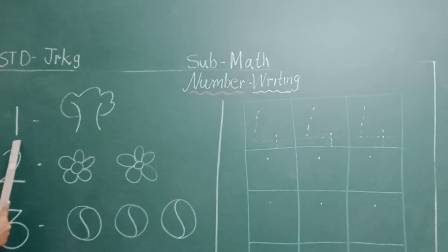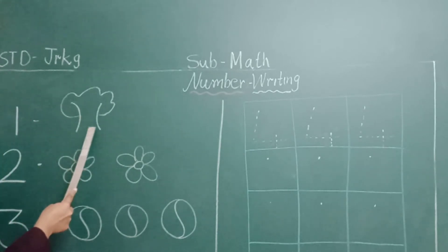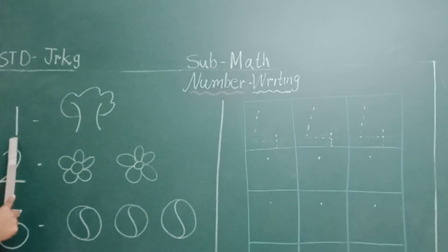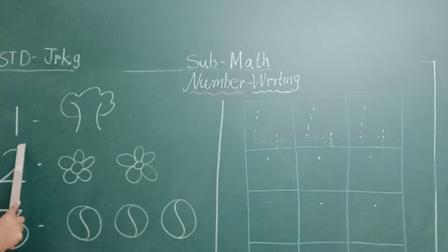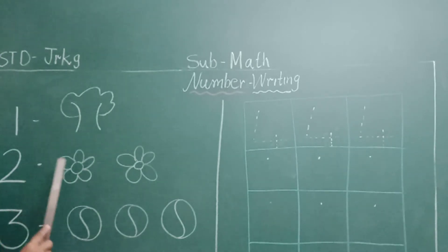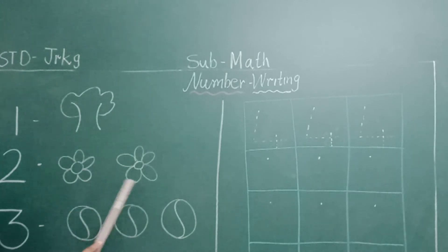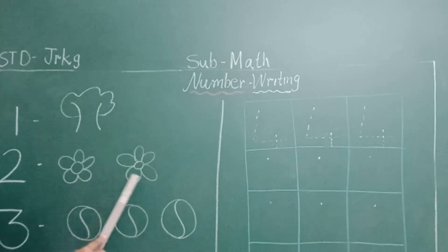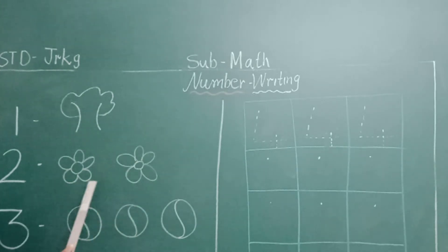Number 1 — 1 tree. After 1, what comes after 1? 2. Number 2 — 2 flowers. How many flowers are there? 2 flowers. 1 and 2.